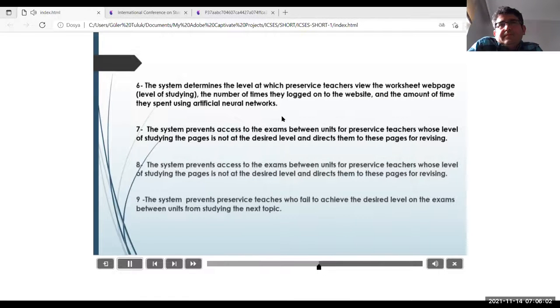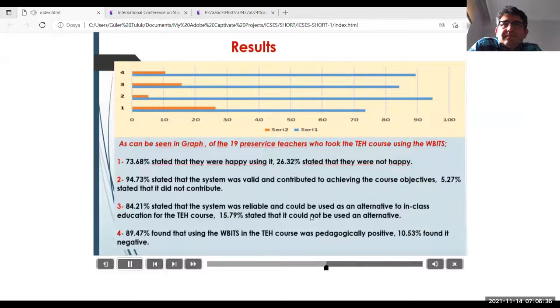7. The system prevents access to the exams between units for preservice teachers whose level of studying the pages is not at the desired level and directs them to these pages for revising. 8. The system prevents preservice teachers who fail to achieve the desired level on the exams between units from studying the next topic. As can be seen in graph, of the 19 preservice teachers who took the TEH course using the WBITS.